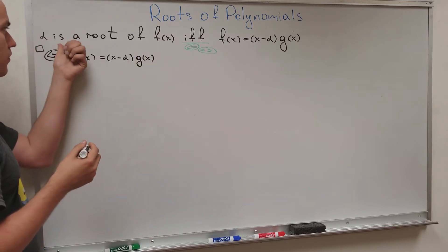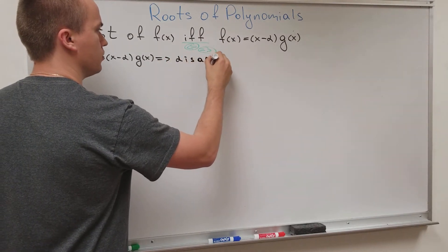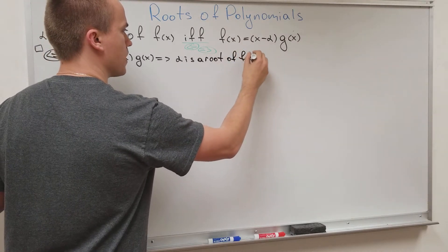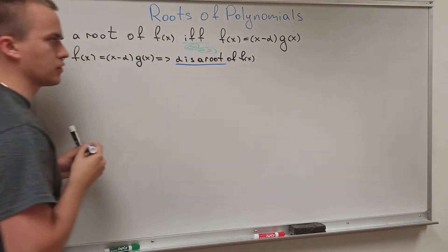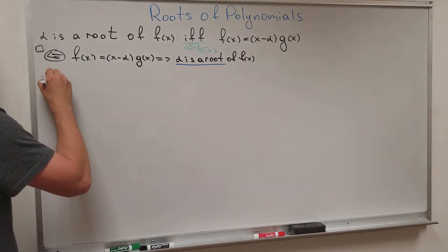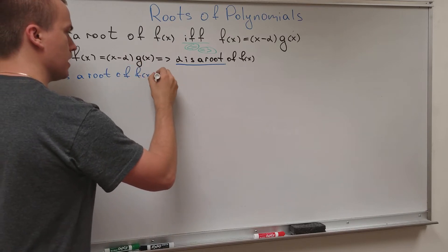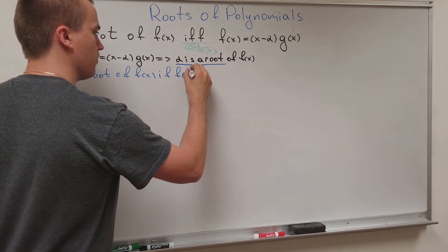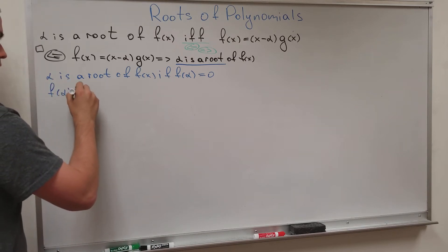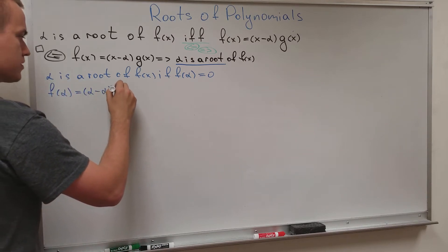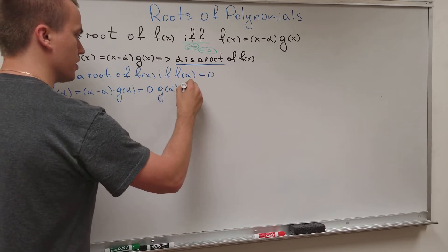I want to show that alpha is a root of f(x). By definition, alpha is a root of f(x) if f(alpha) equals zero. And indeed, if I plug in alpha, I get f(alpha) equals (alpha minus alpha) times g(alpha), which is zero times g(alpha), so it equals zero.